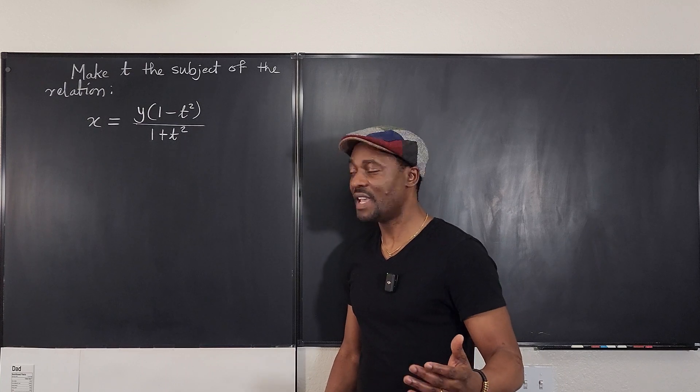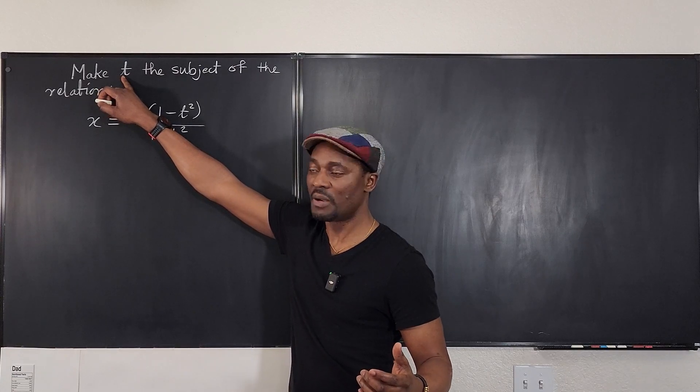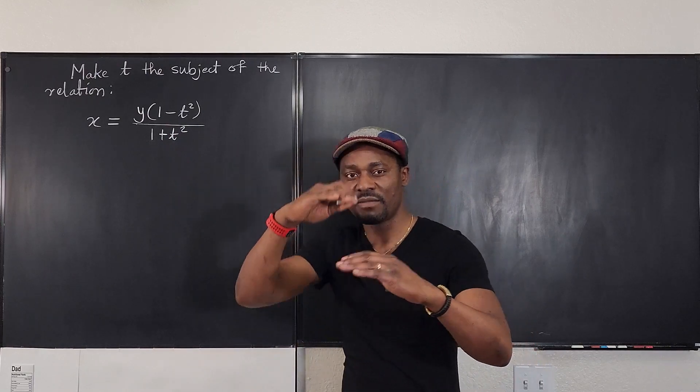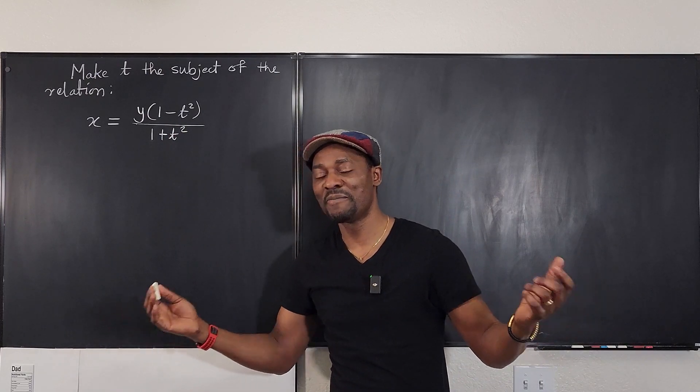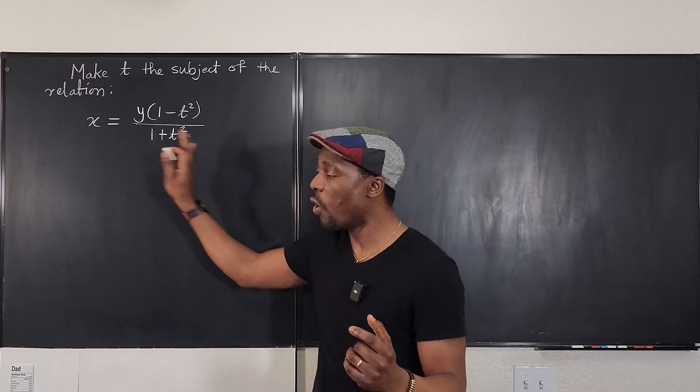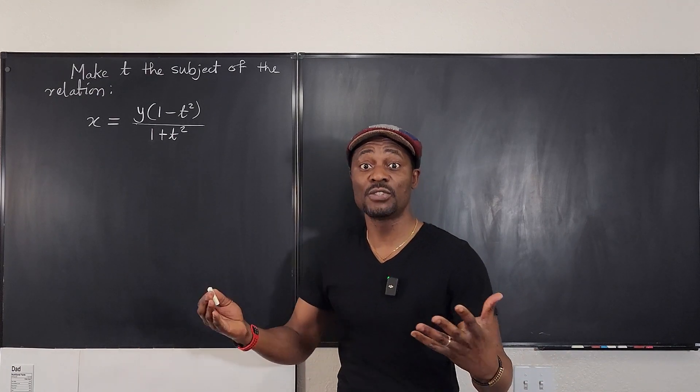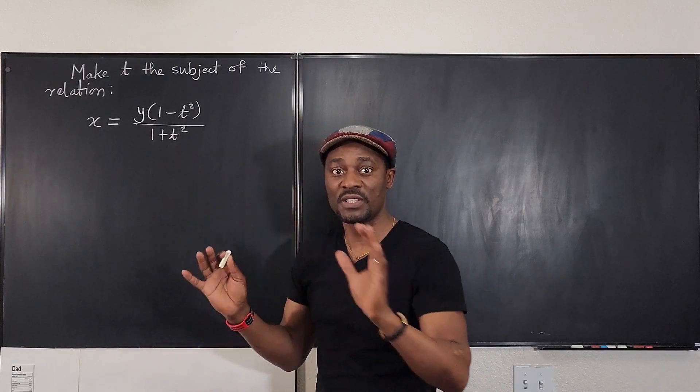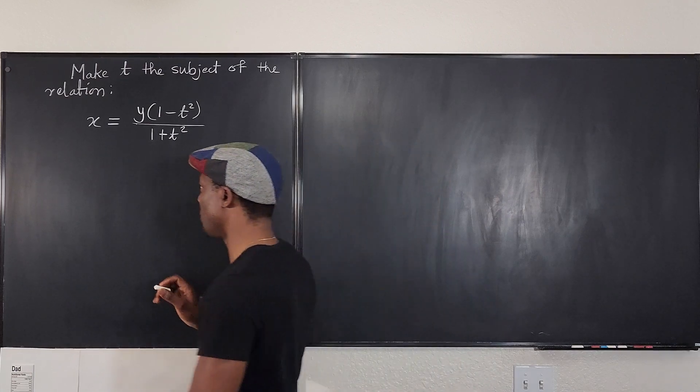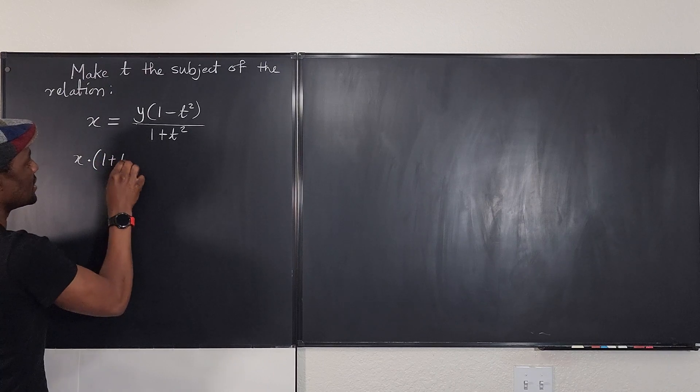The first thing you want to say is, I'm isolating T. I'm making it the subject of the relation and T is both up here and down here. So every time you have a rational expression or a fraction, like I call it, you want to get rid of the fraction first. And my recommended way is to look at all the denominators in the entire equation and say, okay, how many denominators do I have? I have just one. I have one plus T squared is the only term under. So I'm going to take that term and use it to multiply both sides. So the first thing is to use the term and multiply both sides, one plus T squared.